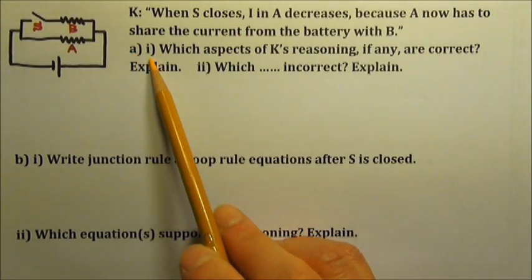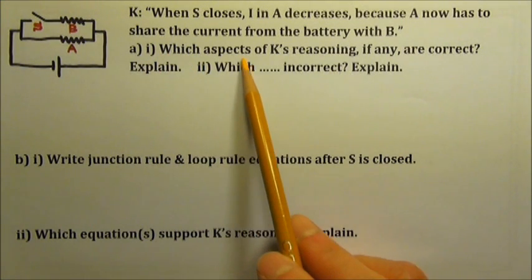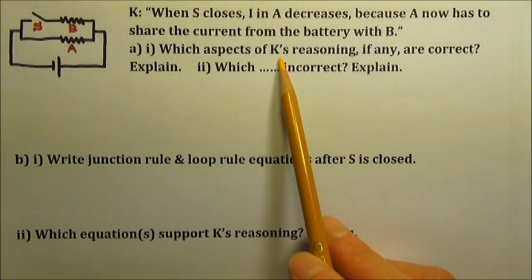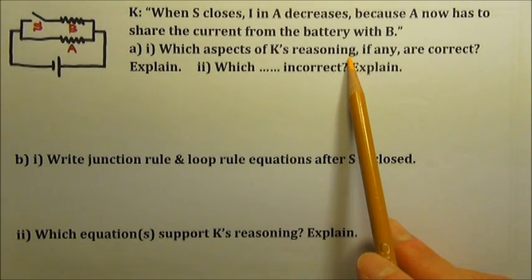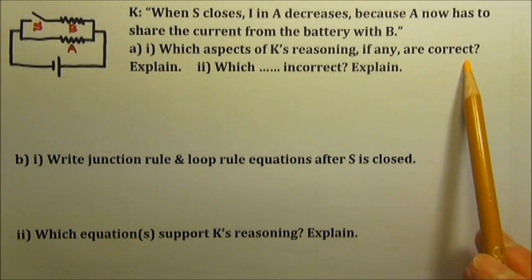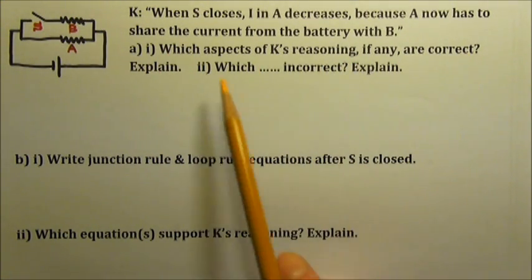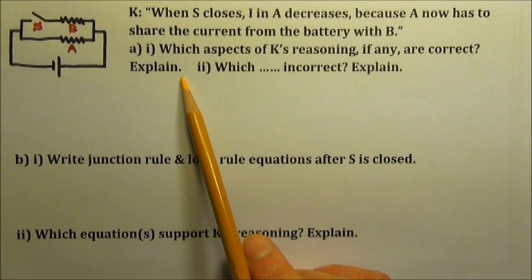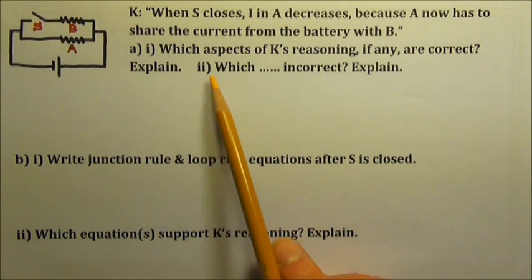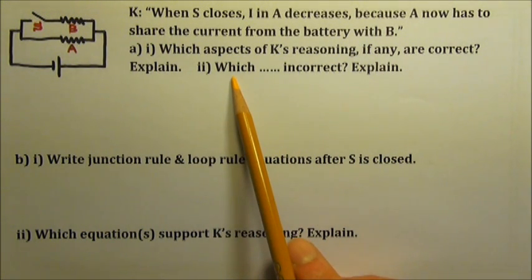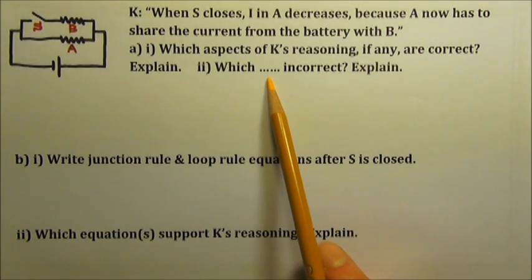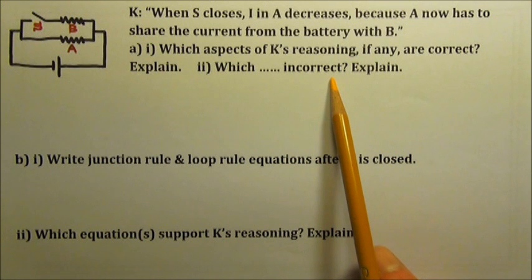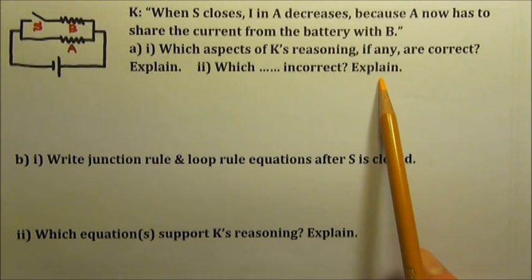Part A1. Which aspects of Student K's reasoning, if any, are correct? Explain your answer. Which aspects of the reasoning, if any, are incorrect? Explain your answer.